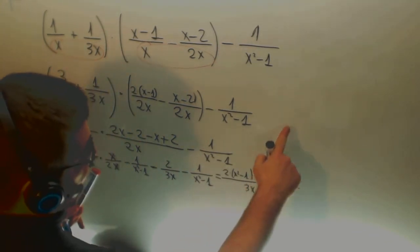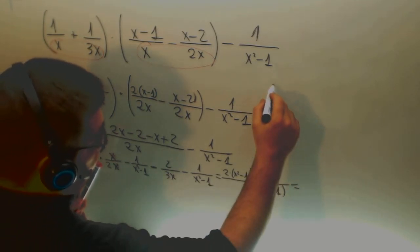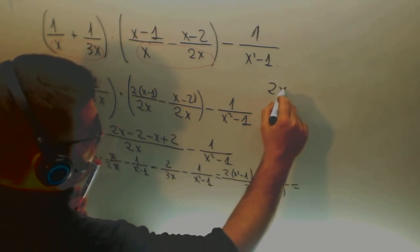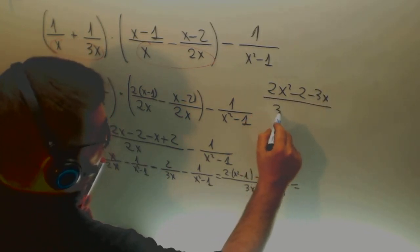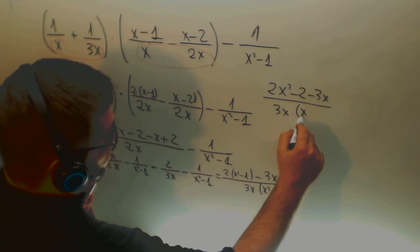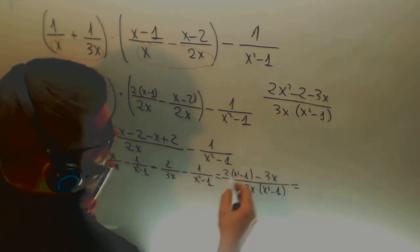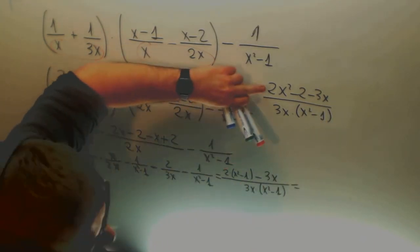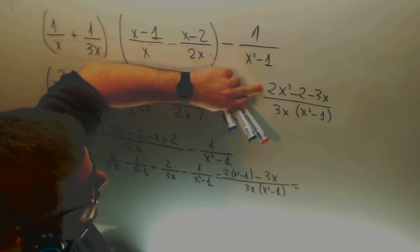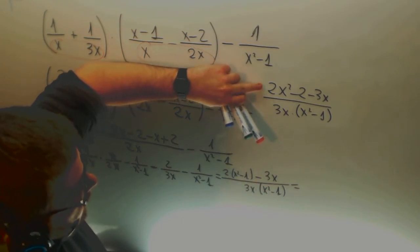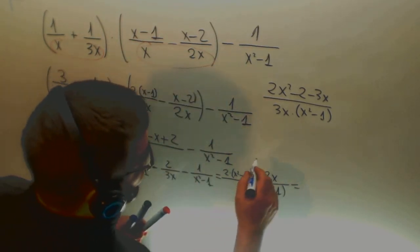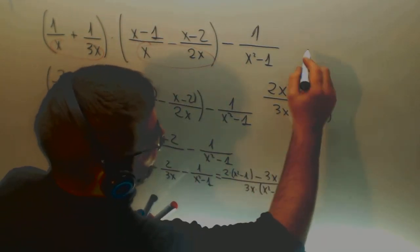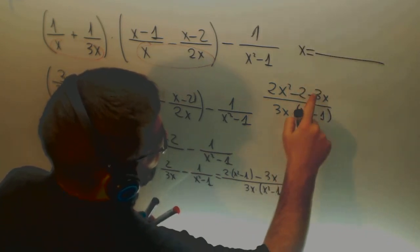I'm gonna write it up here. Up here it would be 2x squared minus 2 minus 3x divided by 3x times x squared minus one and you have to try and simplify this. You have to factorize this polynomial by doing the second grade equation.